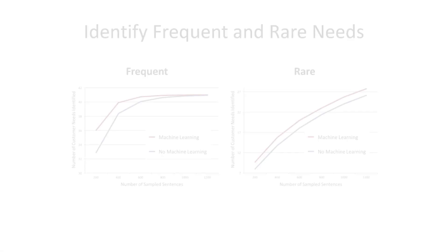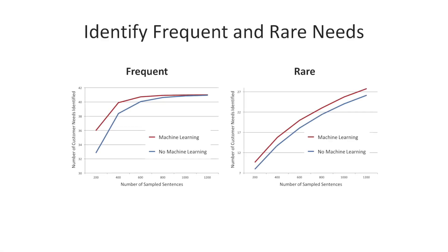This approach helps improve efficiency of identifying customer needs. It takes about 20% less time to identify the same set of customer needs from Amazon reviews compared to without machine learning. If you think about social media data, which is more noisy with more irrelevant sentences, then the machine learning benefits are even more pronounced. Some customer needs are so frequent that you can just go with a random selection of content and identify them almost perfectly with a certain number of sentences.